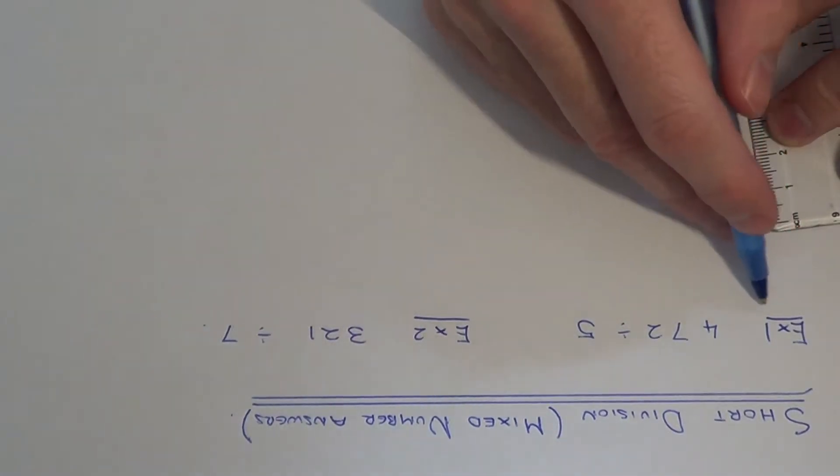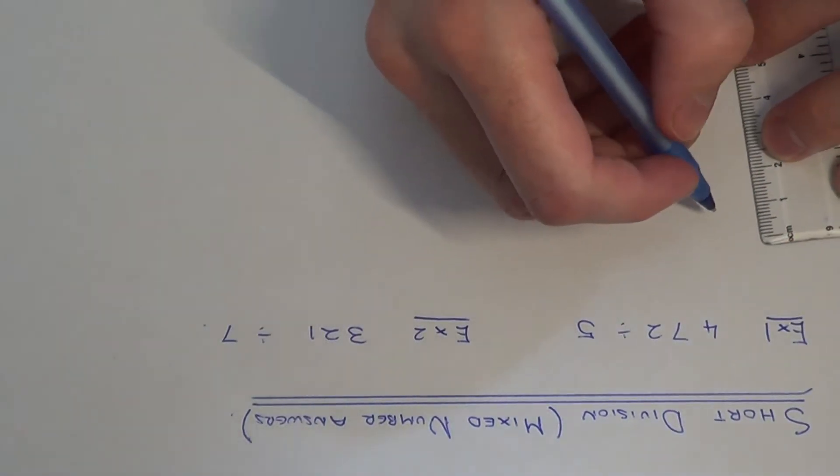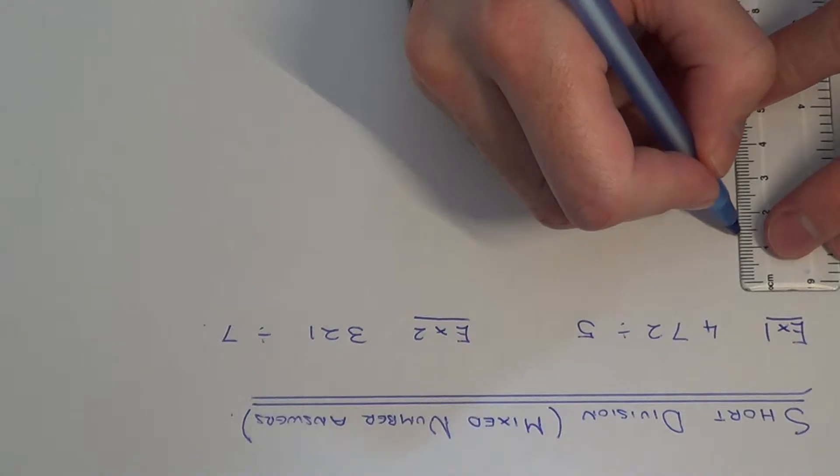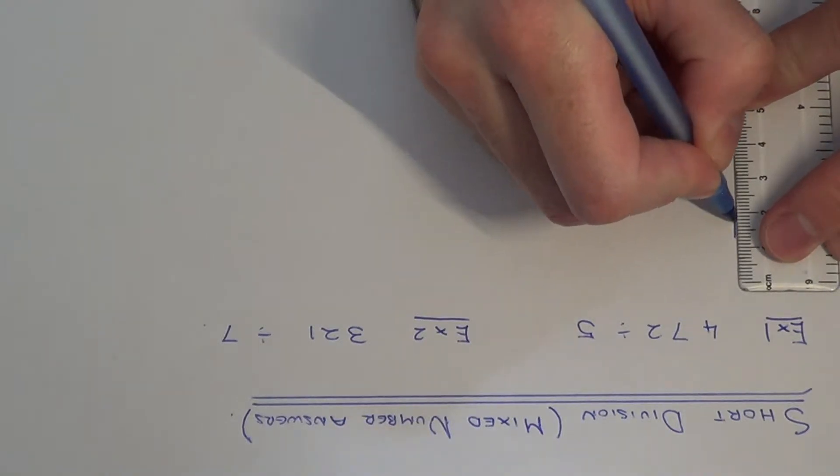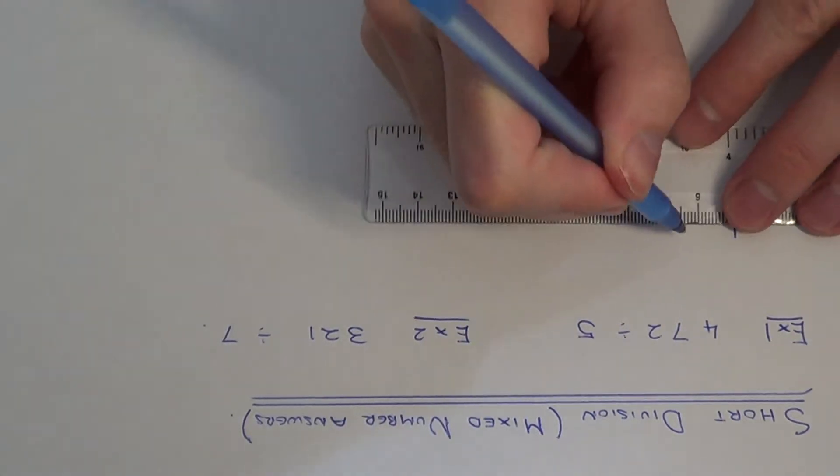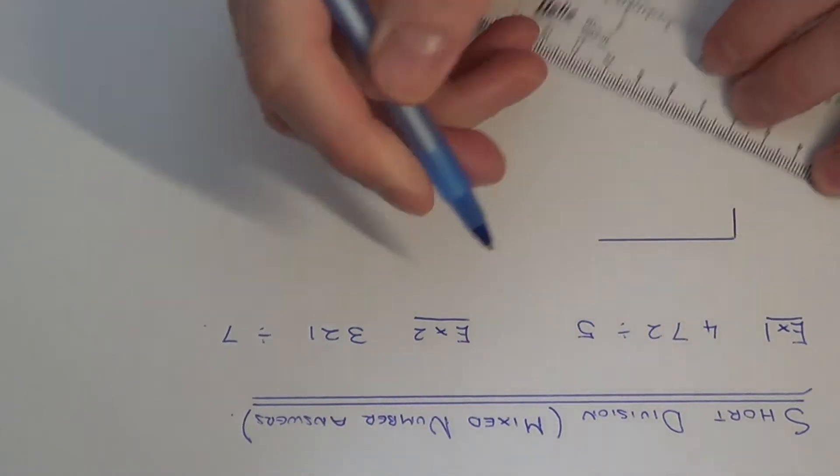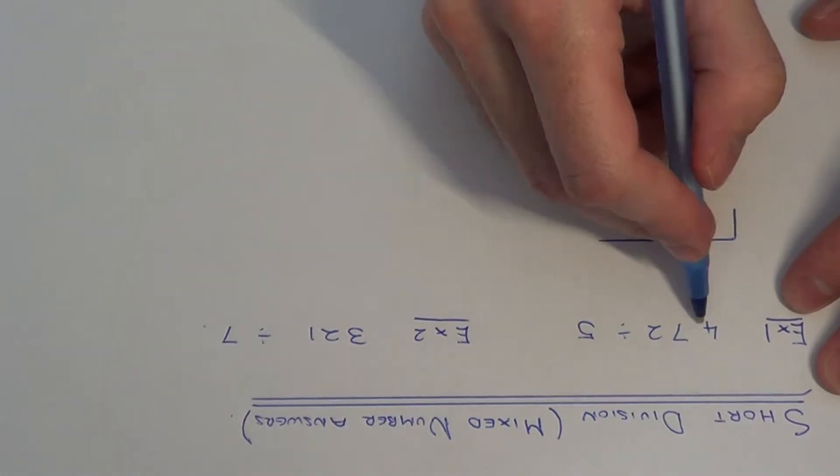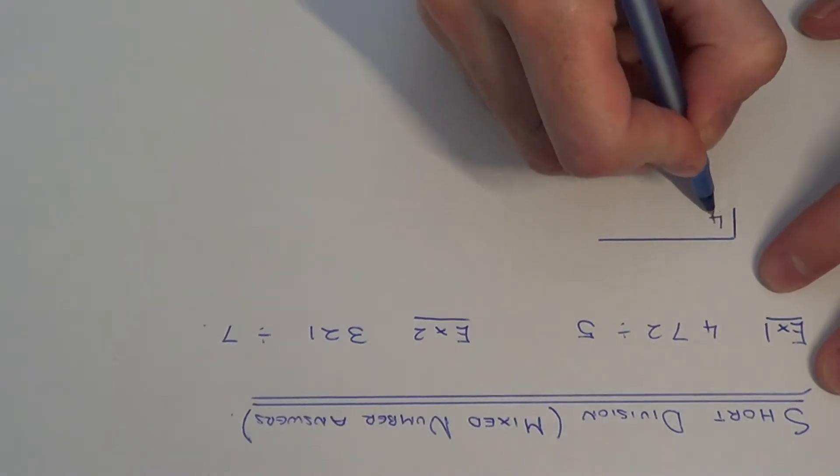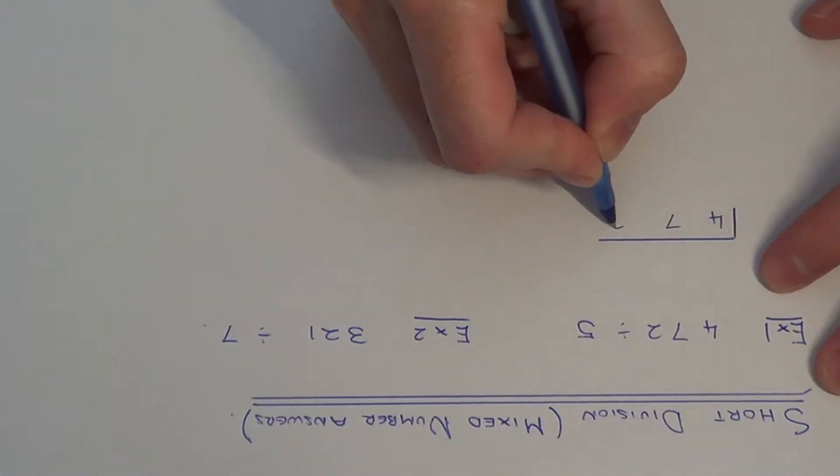So first of all, in example one we've got 472 divided by 5. If we set the division out like so, we need a vertical line and a horizontal line. The number that we're dividing goes underneath the horizontal line, 472.